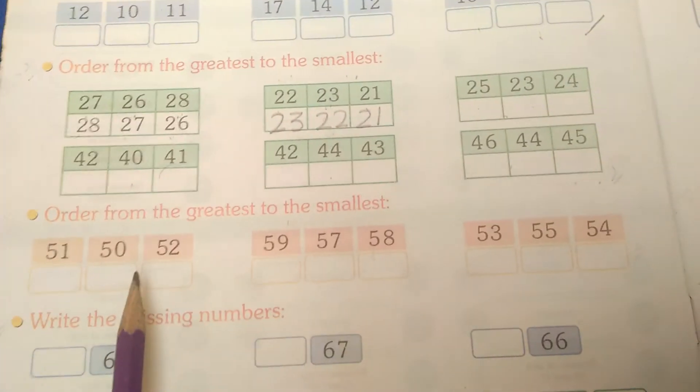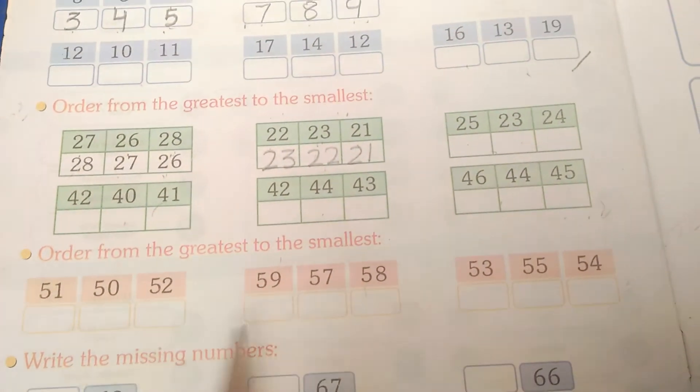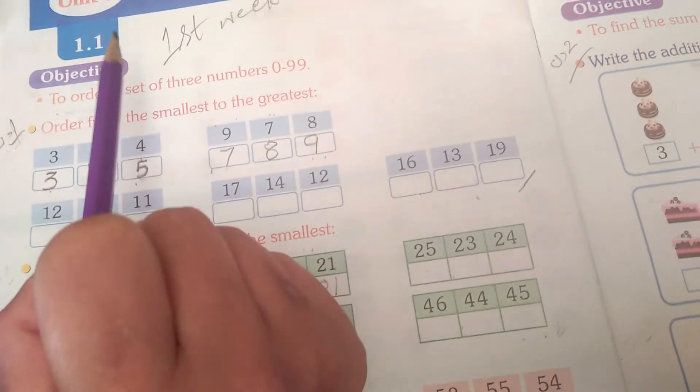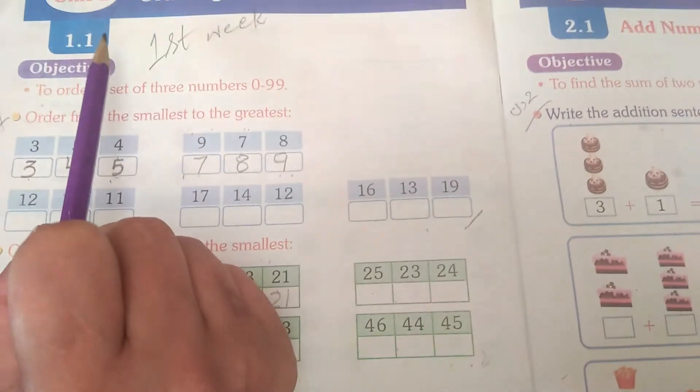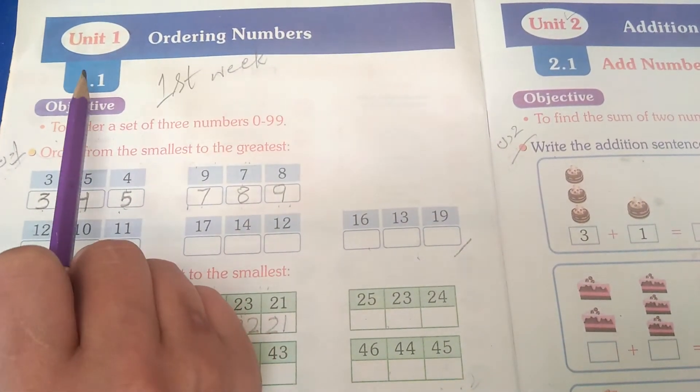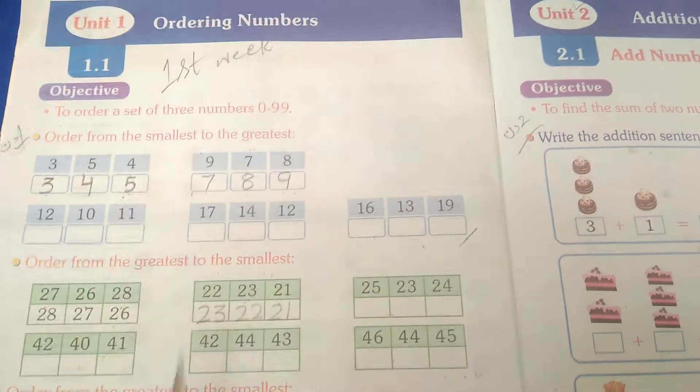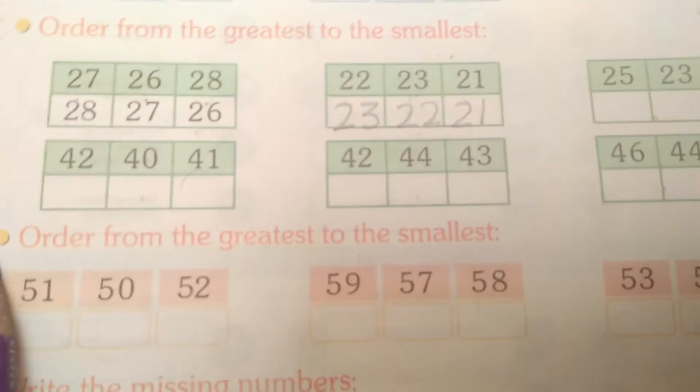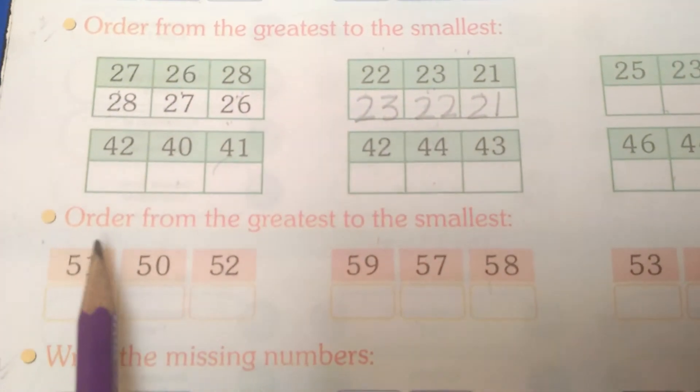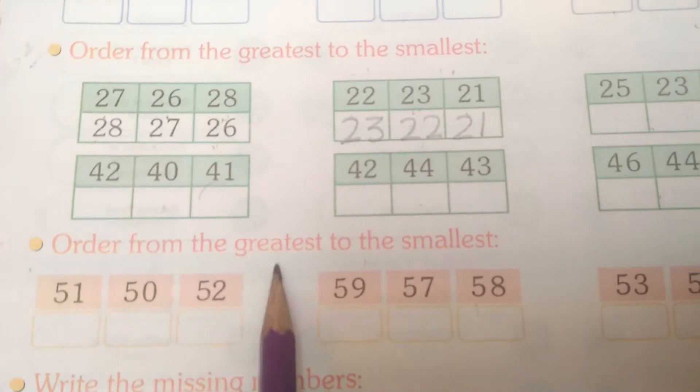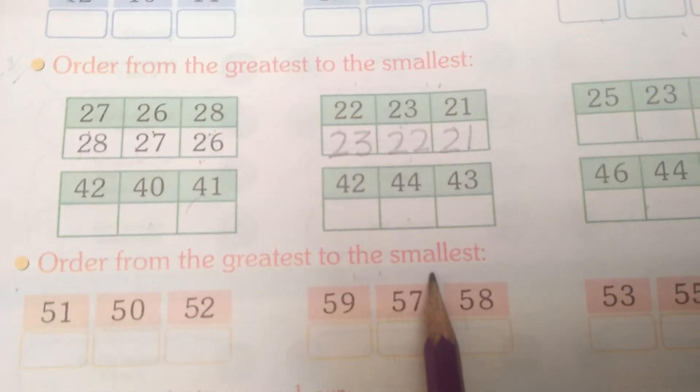Assalamualaikum student, how are you? Class 1 math lecture number 3, unit 1 ordering numbers, question number 3, page 2. Order from the greatest to the smallest.